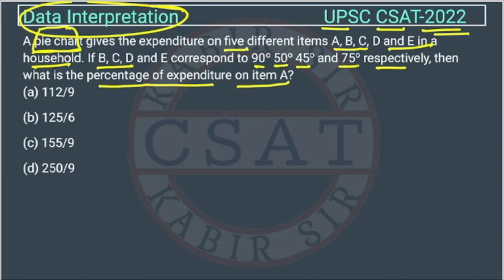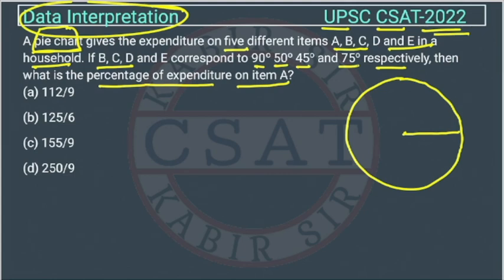This is a very easy question. In a pie chart, you basically just need to know that this whole circle is 360 degrees — the whole circle is 360 degrees — and it also represents 100 percent.